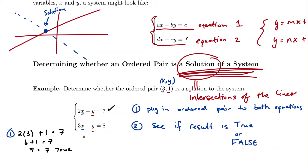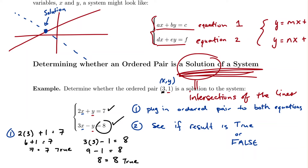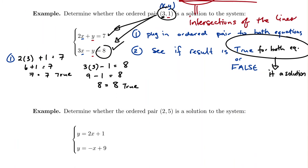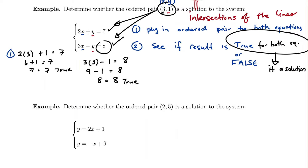Plugging into the second equation: three times three minus one equals eight — nine minus one is eight, and eight equals eight. That's another true statement. If the result is true for both equations, then the ordered pair is a solution. If it's false for any of the equations, it is not a solution — as we'll see in the next example.